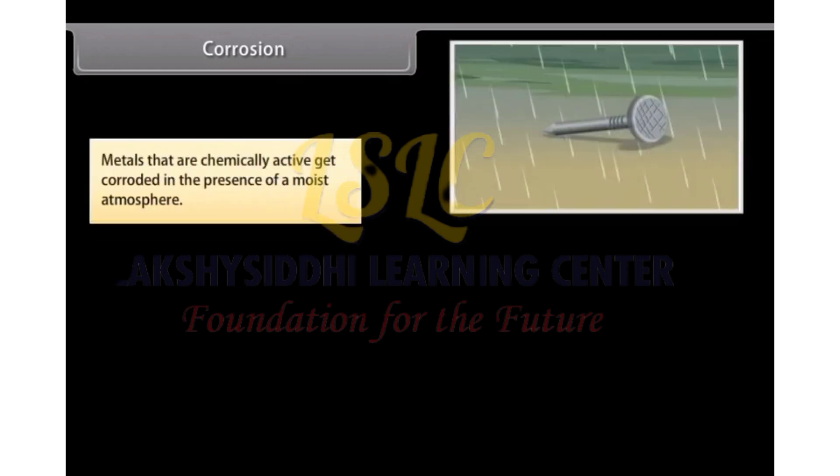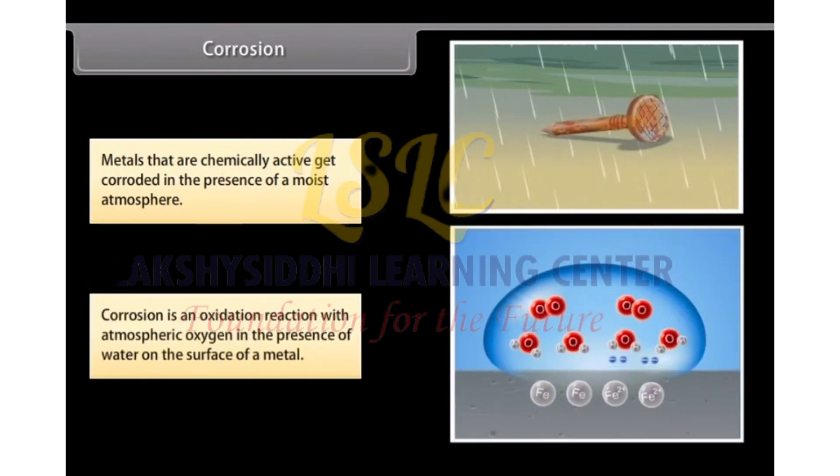Corrosion. Metals that are chemically active get corroded in the presence of a moist atmosphere. Corrosion is an oxidation reaction with atmospheric oxygen in the presence of water on the surface of a metal.